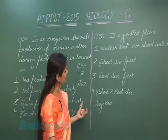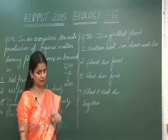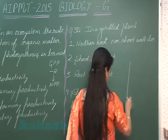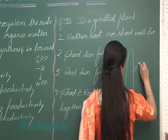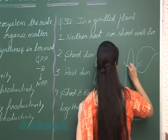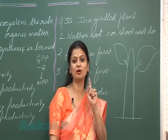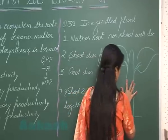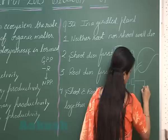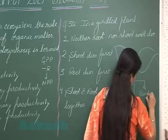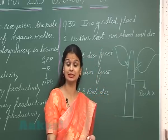Now let's discuss question number 30 about the girdled plant. In a girdled plant, we remove the bark in the form of a ring from a specific area. This removal of bark in the form of a ring is known as girdling, and it is also known as ringing.